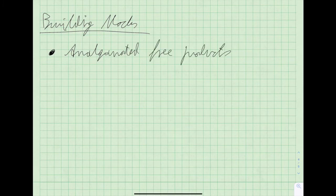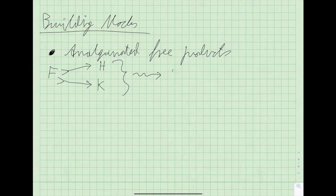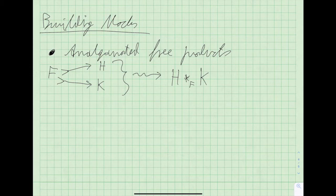Very briefly, the situation is that if you have a group F that embeds into a group H and also embeds into a group K, then from this data you can construct the free product of H and K amalgamated along F. If you discard F, you can also take ordinary free products of groups.